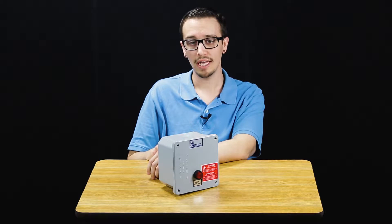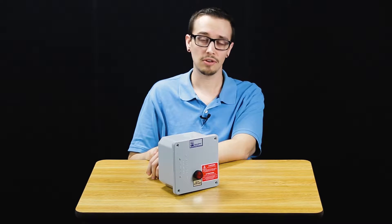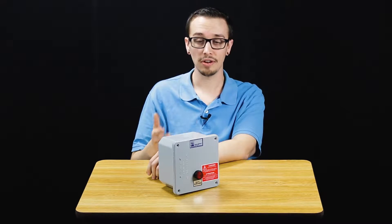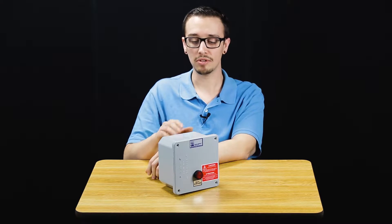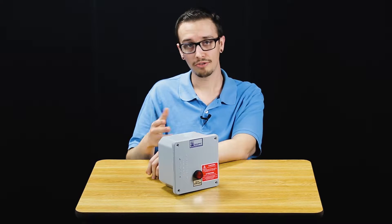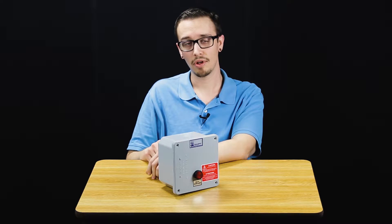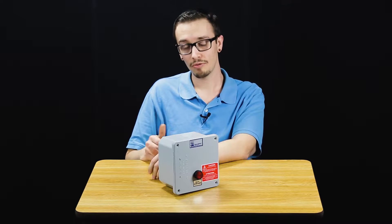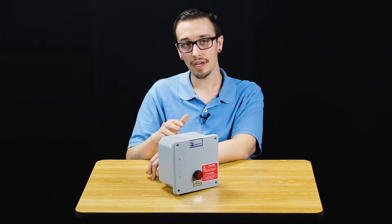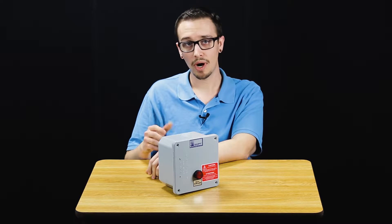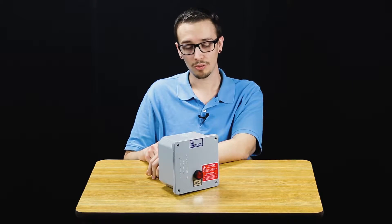You would then be able to tie this panel in to your auxiliary alarm and have a remote alarm system elsewhere for the application. Additionally, it can be used as a standalone alarm and would require a 120 volt power source.